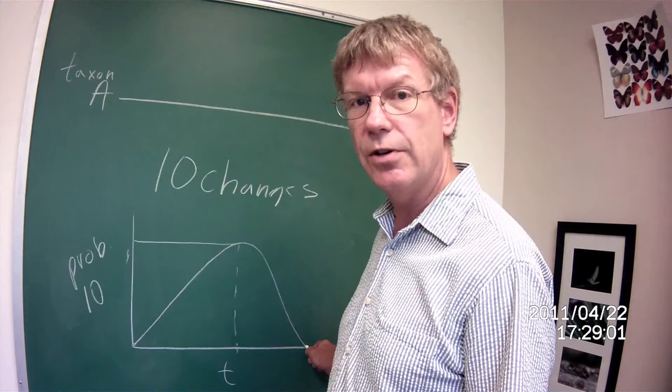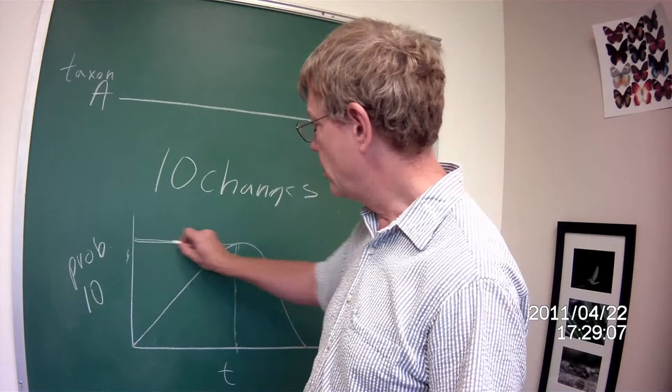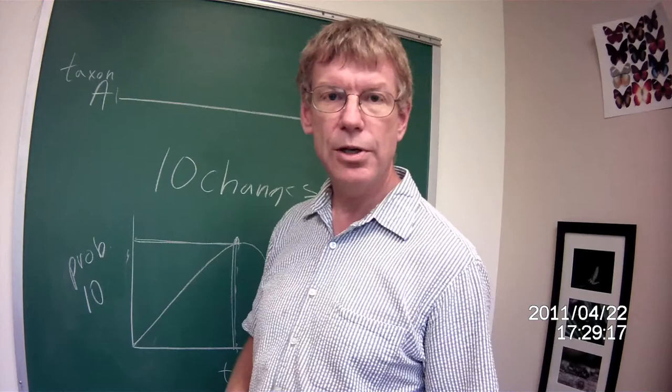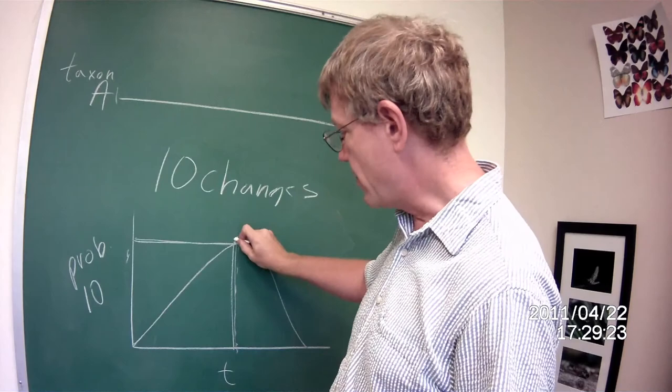So this describes a maximum likelihood curve where we have a peak right here and we have a time that we'll be able to associate with a branch length. Such that at a given period of time, the probability of observing 10 changes between A and B is maximum right here.